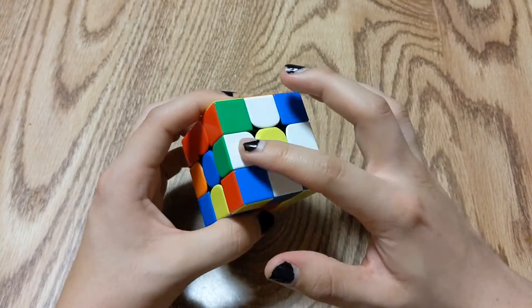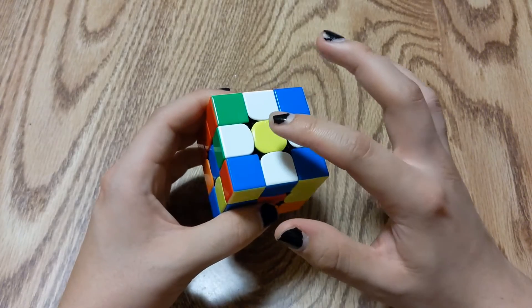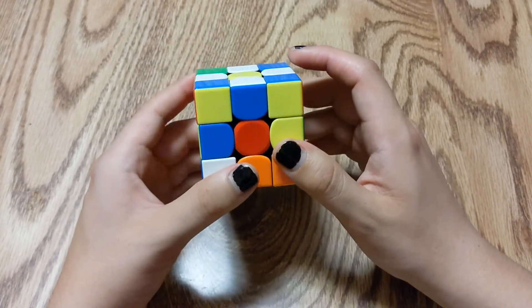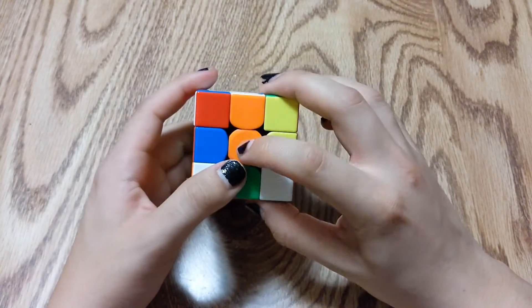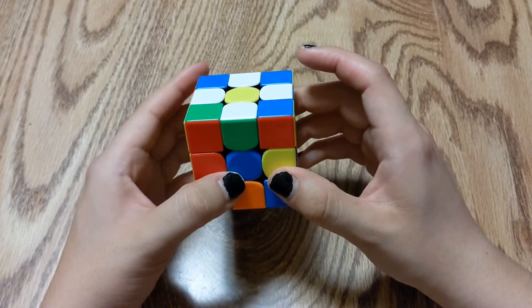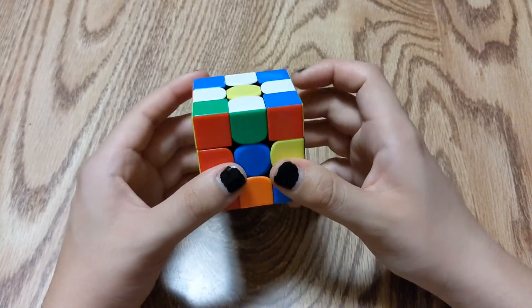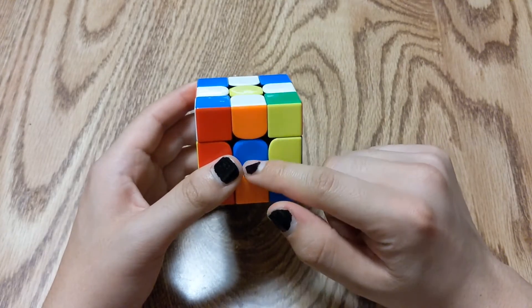Now you have all the white edge cross pieces with yellow on top. From here, you're going to pick any center. I'll start with blue. You're gonna turn the top layer here until you find the blue piece.